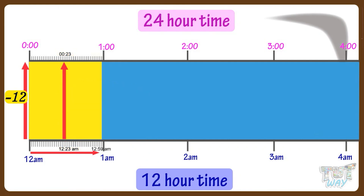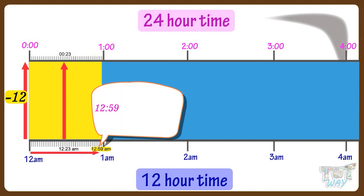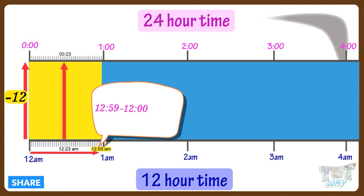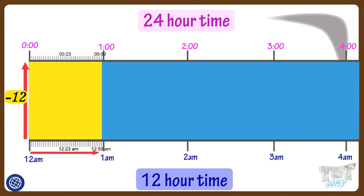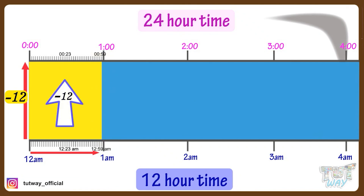If the time is 12:59 a.m. and you want to convert into the 24-hour clock system, subtract 12, and we get 59 minutes past 12 midnight. So, from the time 12 a.m. to 12:59 a.m., we subtract 12 to convert the time to the 24-hour clock system.